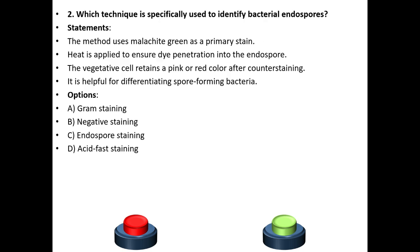Second question. Which technique is specifically used to identify bacterial endospores? Statements: The method uses malachite green as the primary stain. Heat is applied to ensure dye penetration into the endospore. The vegetative cells retain a pink or red color after counter staining. It is helpful for differentiating spore-forming bacteria.